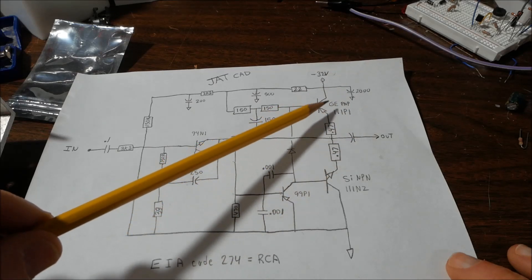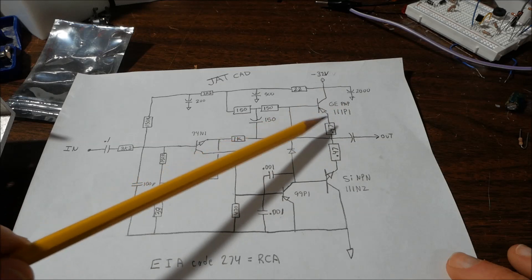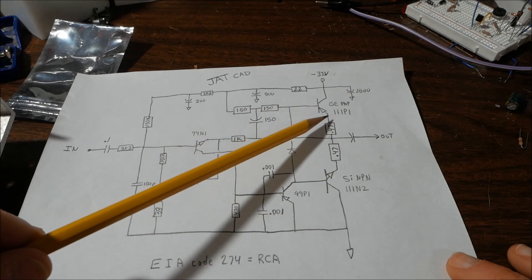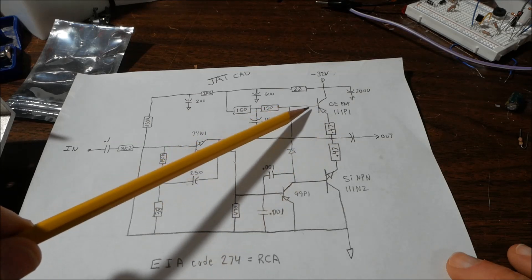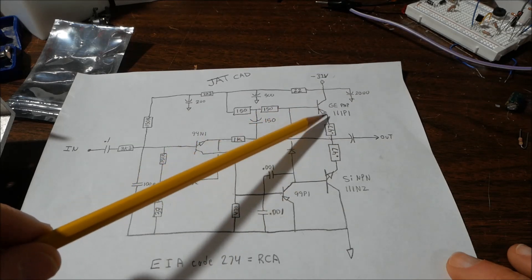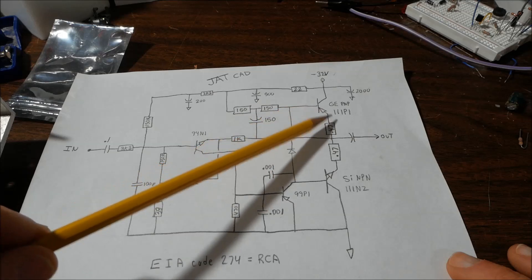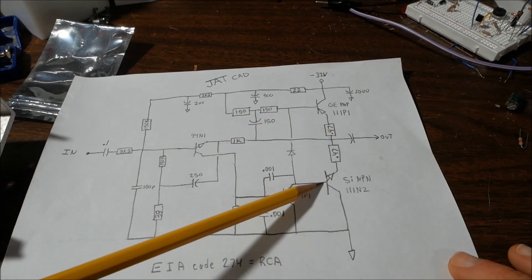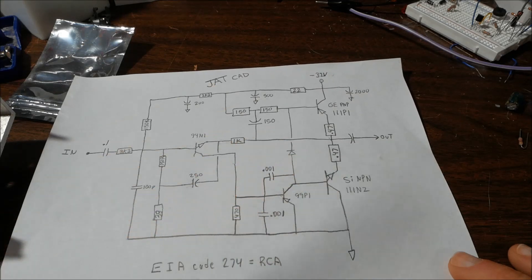But when I measure the bias voltages using the diode function on my meter, this checks out as a germanium transistor, because I'm getting the low diode drop voltages of around 0.1 volt. And this being silicon, it's 0.5 to 0.6 volts or so.